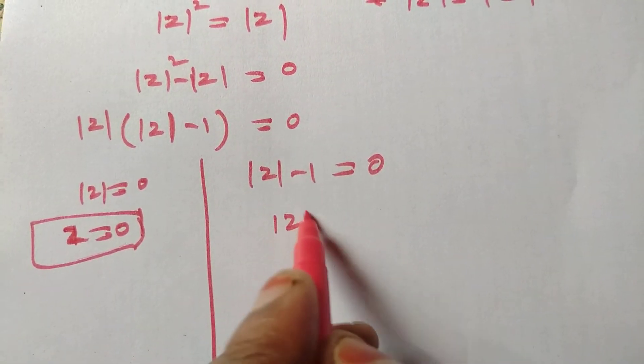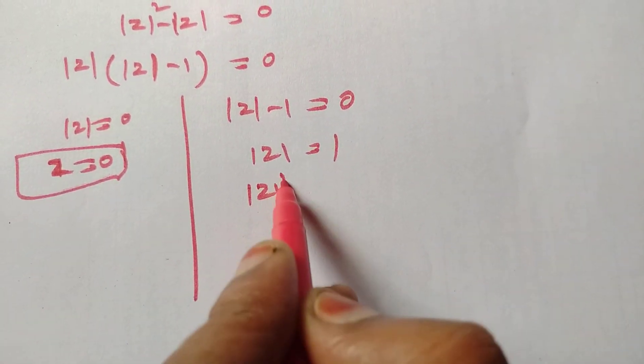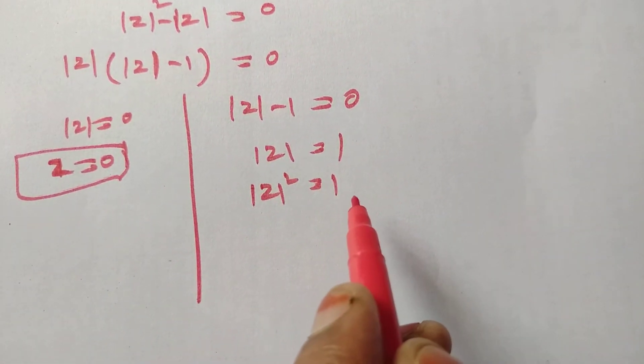Modulus of z minus 1 equal to zero. So modulus of z equal to 1, which means modulus of z squared equal to 1.